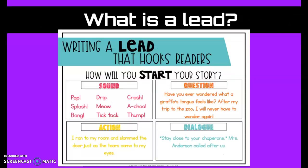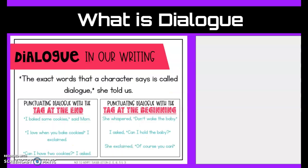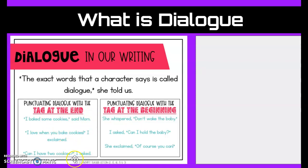We looked at leads and how we can grab the reader's attention by using sounds, questions, action, and dialogue. And then we dug a little bit deeper into dialogue. We practiced how to punctuate dialogue by putting quotation marks around what the person is saying, and then the tag — who is saying this sentence — and then using the correct punctuation inside and outside of those quotation marks.